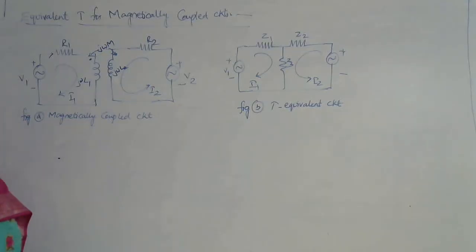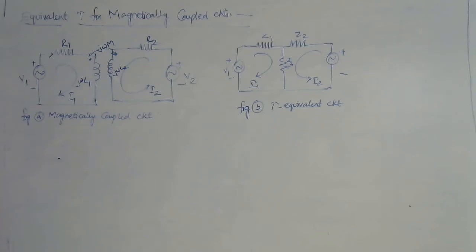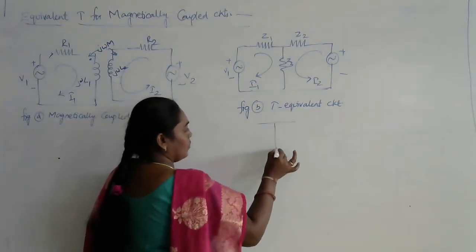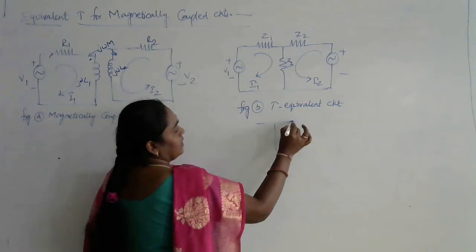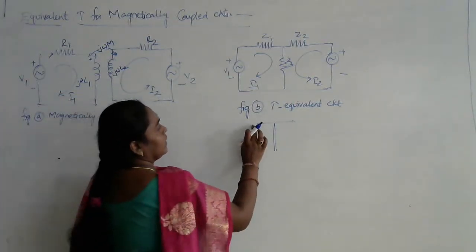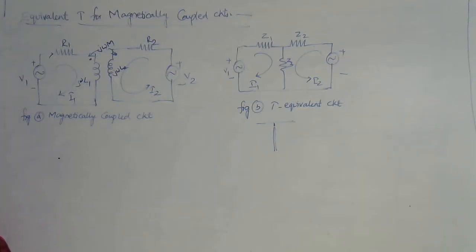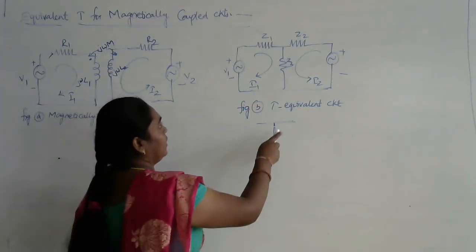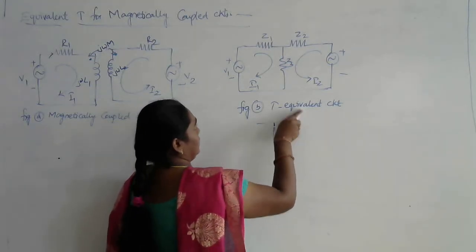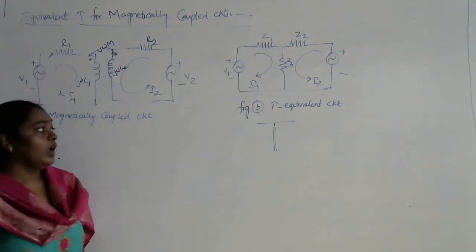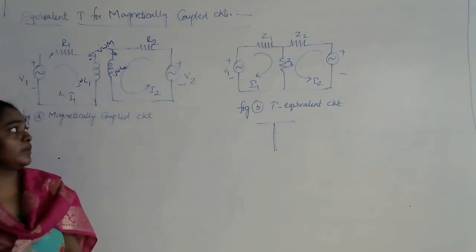The idea behind using equivalent T circuits is converting the magnetically coupled circuits into a T equivalent circuit without using dot convention. The T equivalent shape itself represents the letter T — a complete horizontal line with a vertical line in between. The T equivalent circuit consists of impedance parameters: Z1 and Z2 in the horizontal branches, and Z3 in the vertical branch between them.